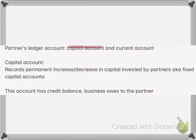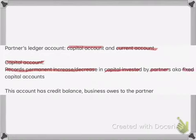The partners' ledger accounts include a capital account and a current account. The capital account records permanent increases or decreases in the capital invested by each partner, and is also known as a fixed capital account. The capital account normally has a credit balance, which means that amount is what the business owes to the partner.